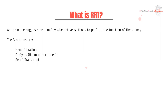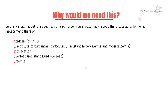Before we talk about each one, it's important to know the indications for renal replacement therapy. A good mnemonic is A-E-I-O-U — the vowels. A stands for acidosis; a pH less than 7.1 is considered severe enough to require RRT. E stands for electrolyte disturbances, particularly hyperkalemia and hypercalcemia that are resistant to medical therapy.